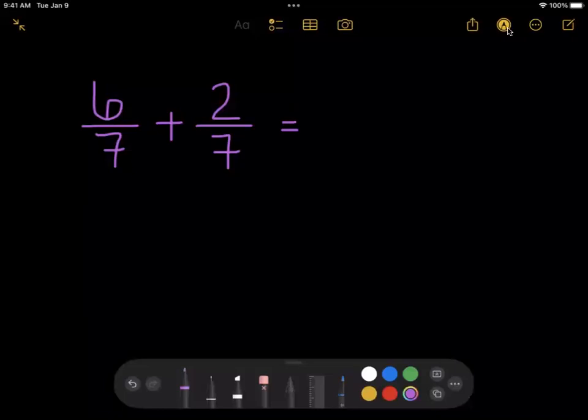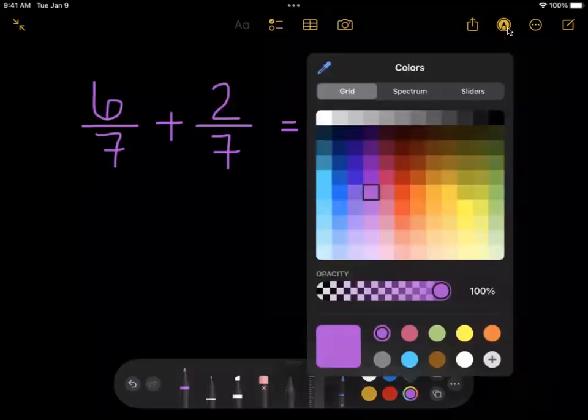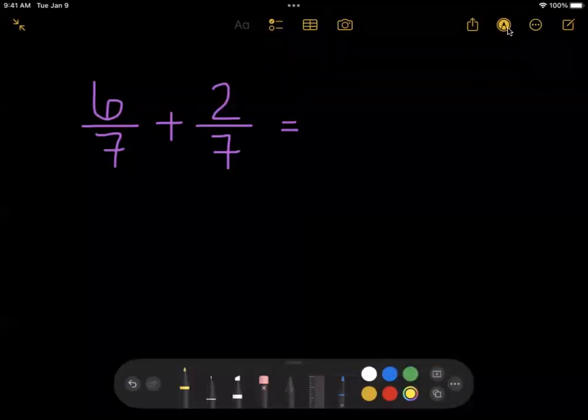Whenever you're adding fractions, you want to check and make sure that the two fractions have the same denominator or bottom number before you add them. In this case, they both have seven as their denominator, so we are ready to add them.